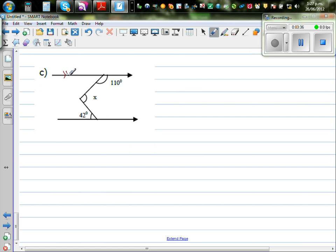Again, these are parallel lines. So this is 42. What is this angle? These two add up on a straight line. Angles on a straight line add to 180. So this is 180 minus 110. 180 degrees minus 110 degrees is 70 degrees. So this angle is 70 degrees.